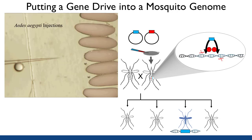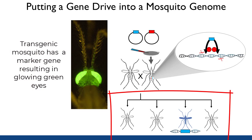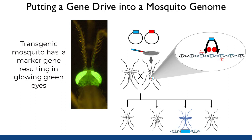The technology for creating transgenic insects is not 100% efficient, so only a fraction of the progeny arising from that insect that had been injected as an embryo will be transgenic. Typically, a gene conferring a visible phenotype is included in the package of transgenes, so that identifying those initial transgenic insects is easier. Often a gene encoding a protein that fluoresces under some conditions is used, making the identification of a transgenic mosquito easy, even at the larval stages.